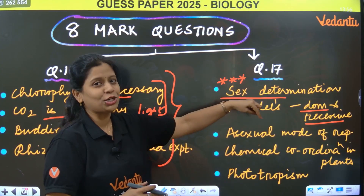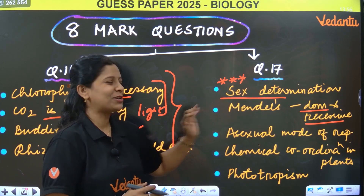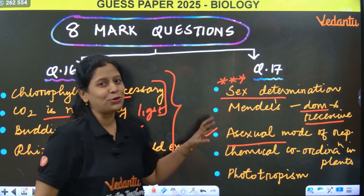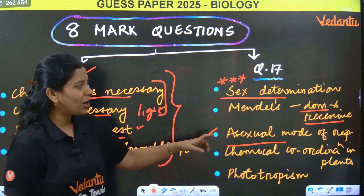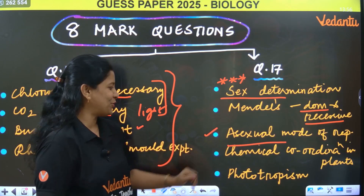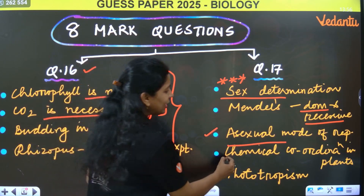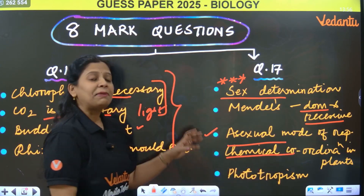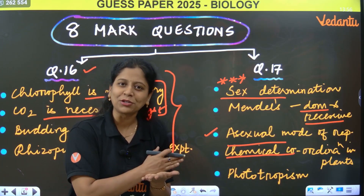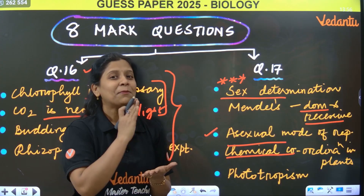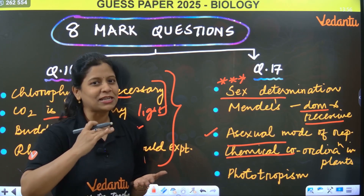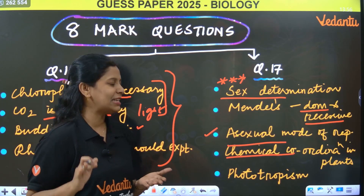In the evening session we will discuss what the possible questions are. Asexual mode of reproduction — seven types of asexual mode of reproduction — very, very important for 8 marks, 2 marks, and also 4 marks. Then chemical coordination in plants — phytohormones, cytokinins, abscisic acid, ethylene.